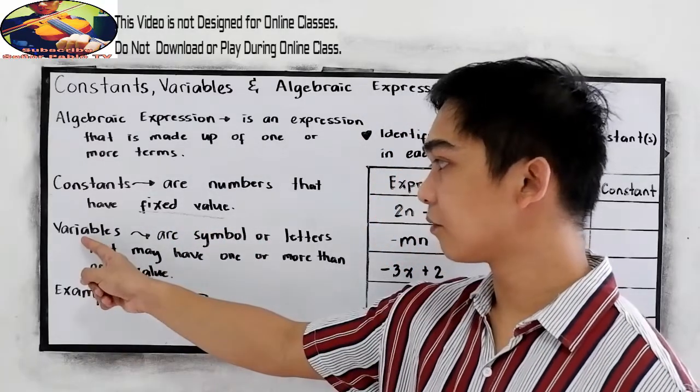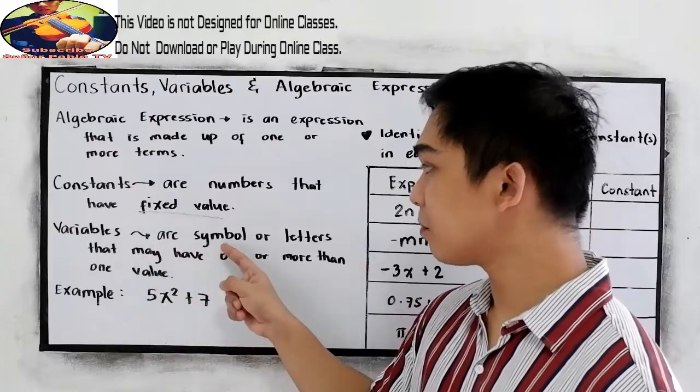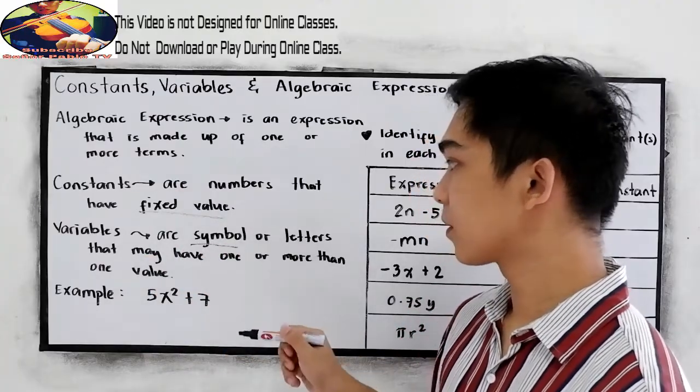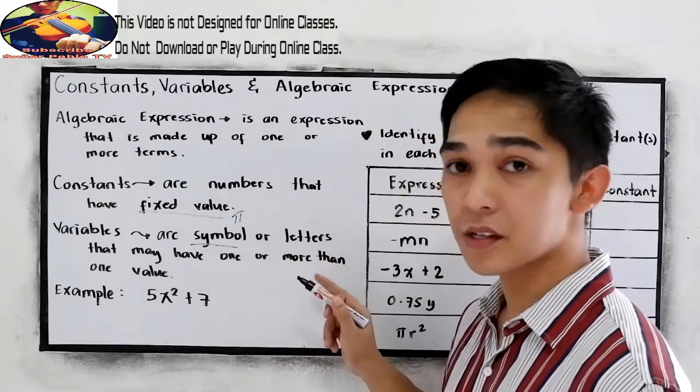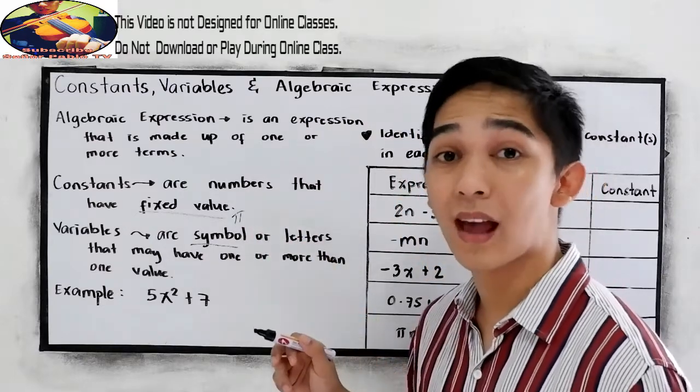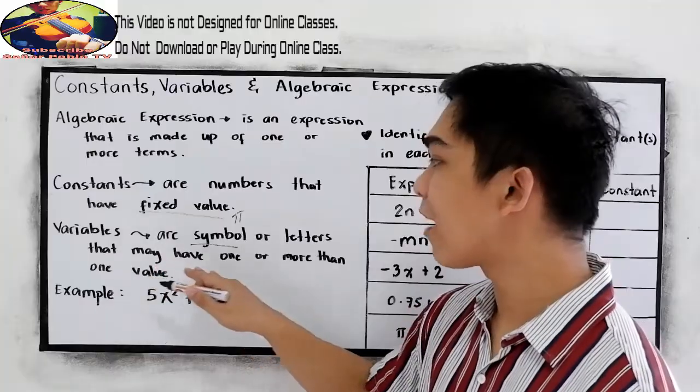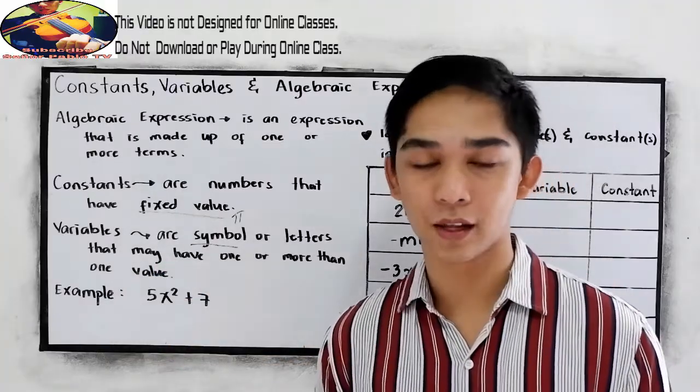And variables are symbols, it can be pi, or letters, letters in our alphabet, that have one or more than one value.